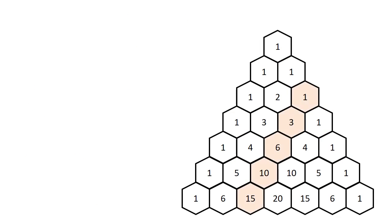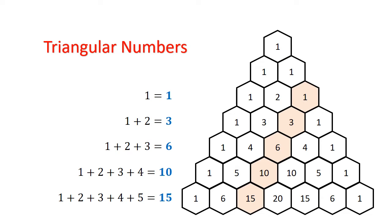If we look at this diagonal, these numbers are the triangular numbers that we've covered in the previous episode on arithmetic progression. The first number is 1, the second number 3 is equal to 1 plus 2, 6 is equal to 1 plus 2 plus 3 and so on. Each of these numbers are the successive sums of natural numbers.